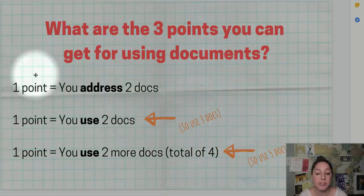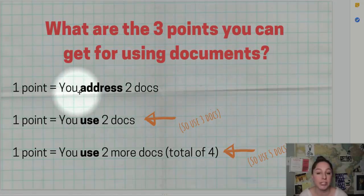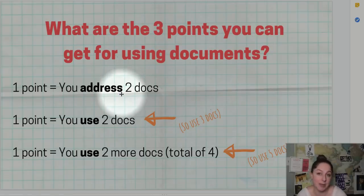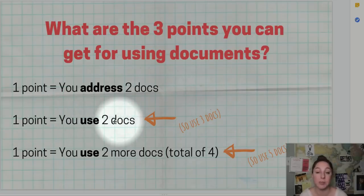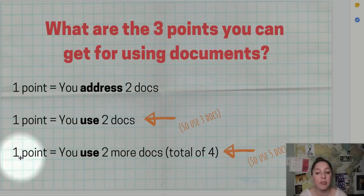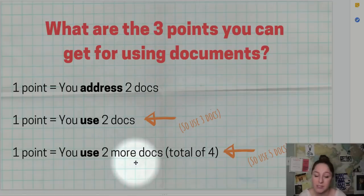Here are all the points you can get. You get one point just for addressing two documents — that just means describing a document accurately. You can get another point for using those same two documents to support an argument. Finally, you can get a third point if you use two more documents to support your argument, for a total of four.